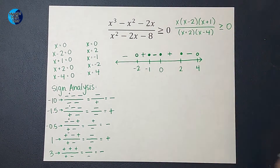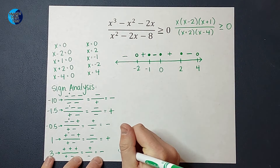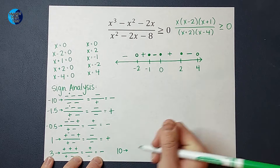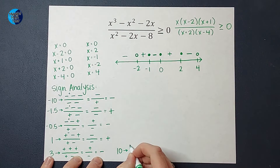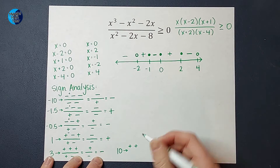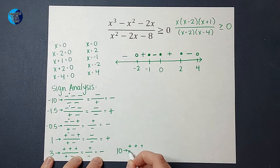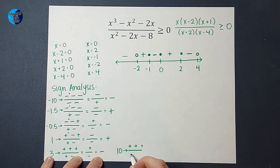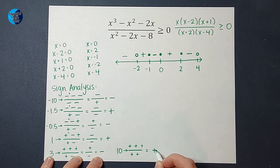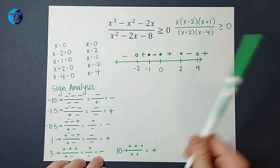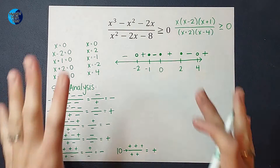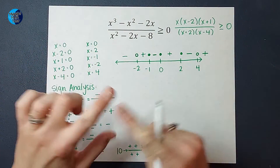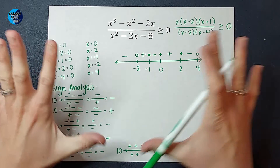Last one — I need a number bigger than 4, I'm going to pick 10. If I plug in 10 for x, I get positive. 10 minus 2 is positive. 10 plus 1 is positive. 10 plus 2 is positive. 10 minus 4 is positive. All those positives end up being positive. I do see that these are alternating, and that is often the case, but it is not always, so don't bank on that always.